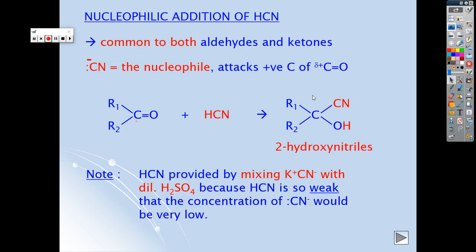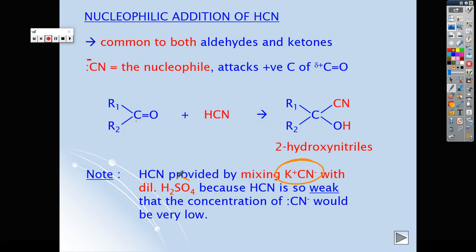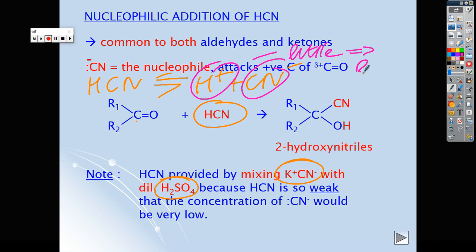The reaction is speeded up by using potassium cyanide mixed with dilute sulfuric acid. You might think, why not just use hydrogen cyanide? Well, hydrogen cyanide is used—it is a reactant—but it's an extremely weak acid, so it only very partially ionizes. We need hydrogen ions and cyanide ions both for this reaction to occur. If we're relying on hydrogen cyanide as a source of those, unfortunately there are very few of them, and that means the reaction ends up being far too slow.